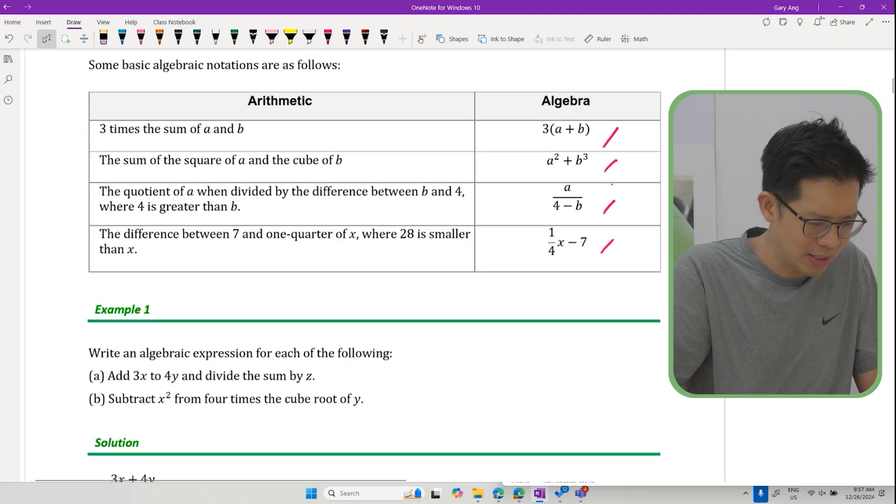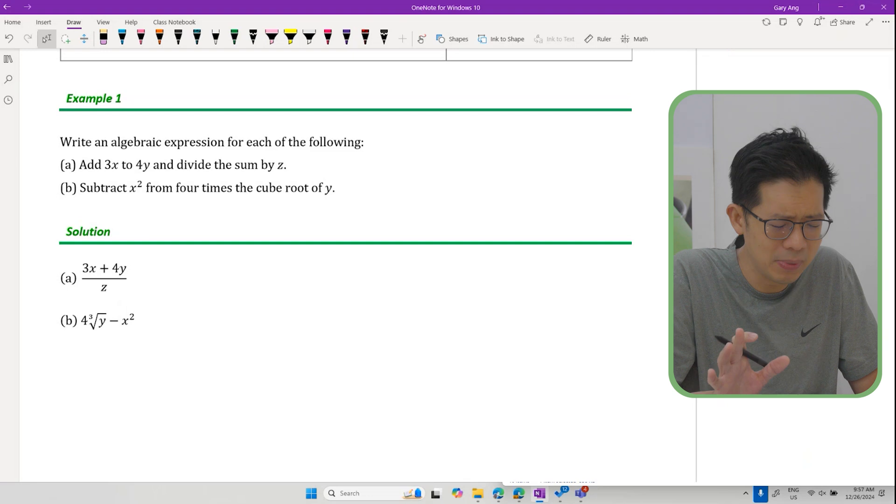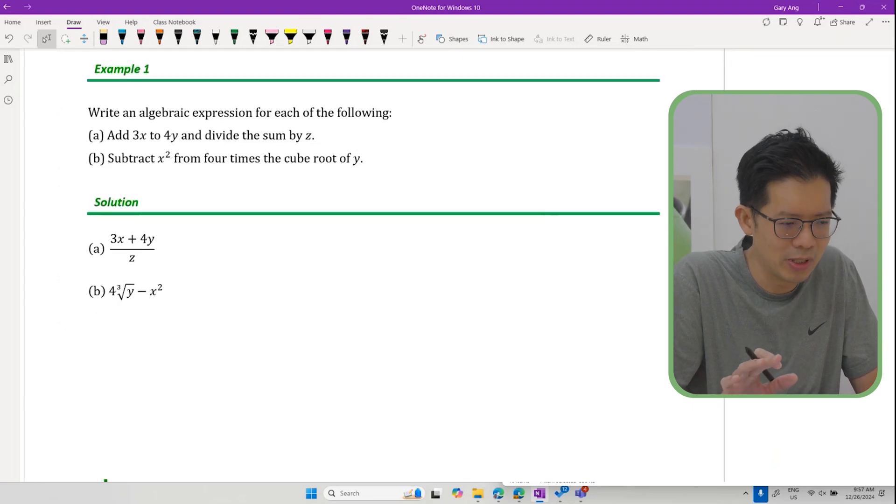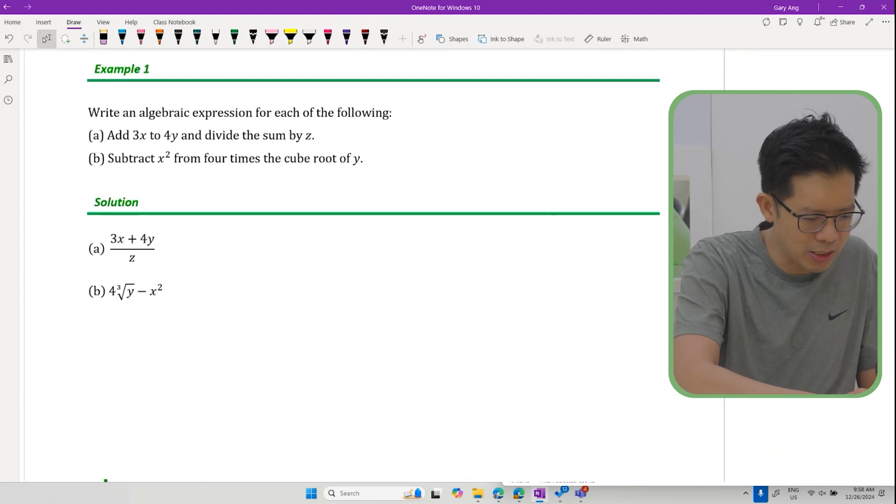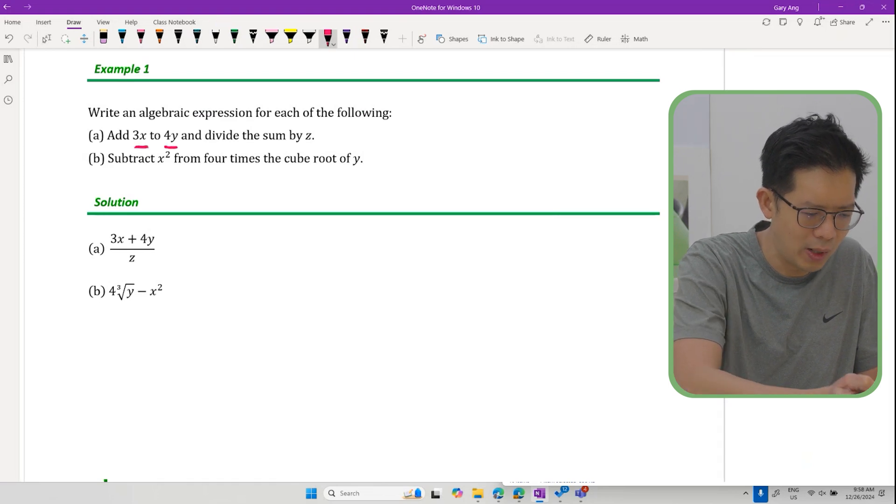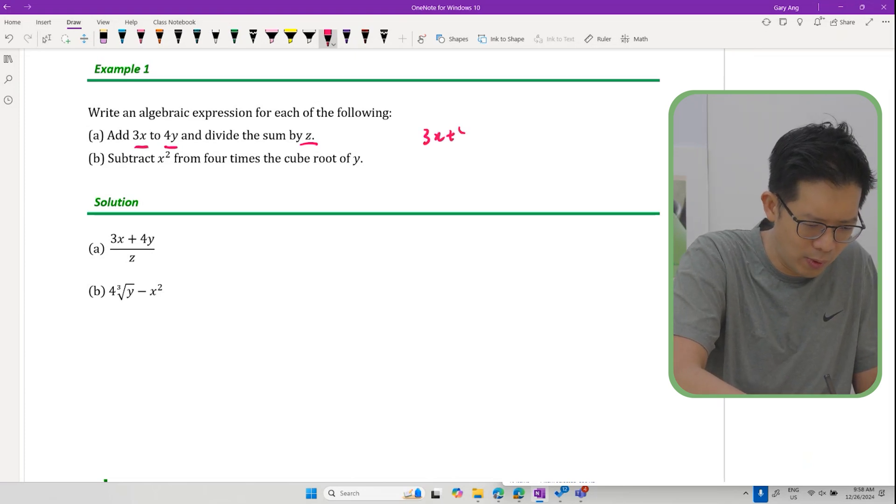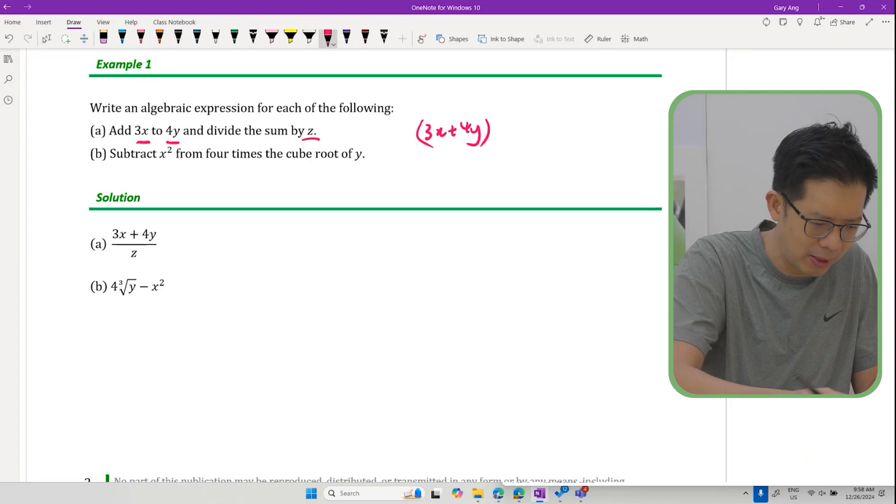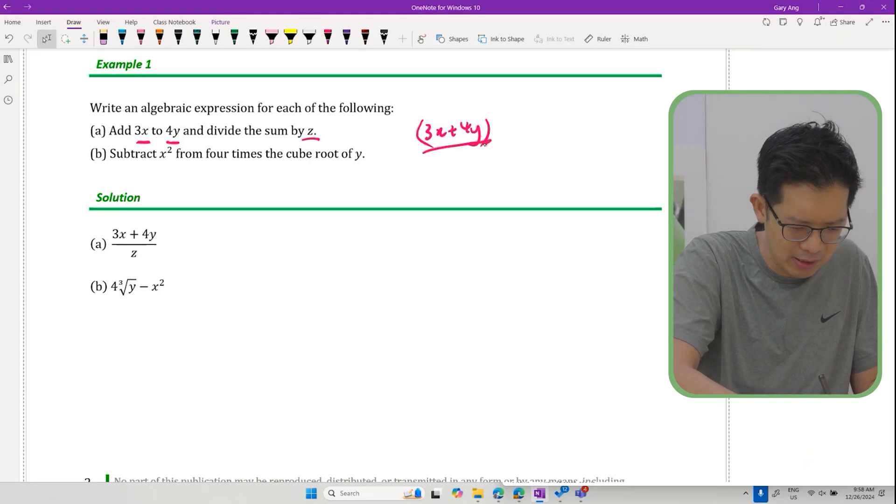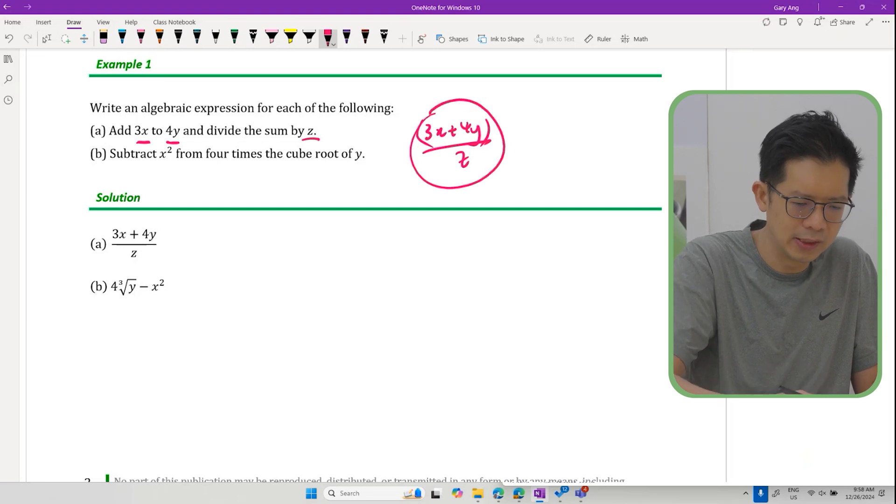Let's take a look at some examples. Example one is quite simple to be honest - this is the beginner's guide to algebra in sec 1 really. Write an algebraic expression for each of the following. Add 3x to 4y and divide the sum by z. Pretty obvious, just follow the instructions. You add 3x to 4y - this is the sum they're talking about. Divide the sum by z, so there you go. That's the algebraic expression.